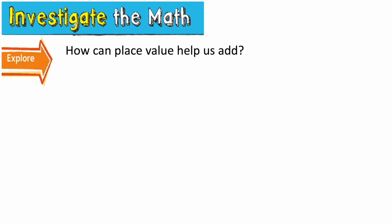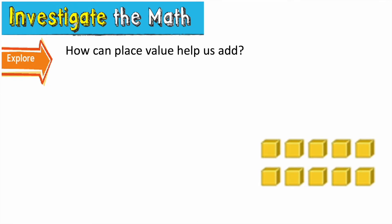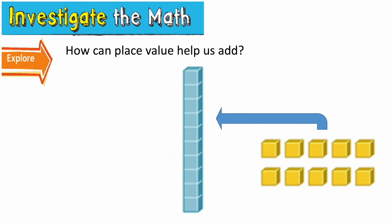Let's again turn and talk about how we can use place value to help us add, then have kids share out. Today we're going to think about how place value can help us regroup ones into tens. We know that ten single ones is the same as one group of ten. So today when we're adding, if we have ten or more ones, we have to take ten single ones and regroup them into a group of ten. So if we add up our ones and we have thirteen ones, do we have to regroup? Thumb up or down? Yes, we do have to regroup. If we have nine ones, thumb up or down — do we have to regroup? No, we don't have to regroup.